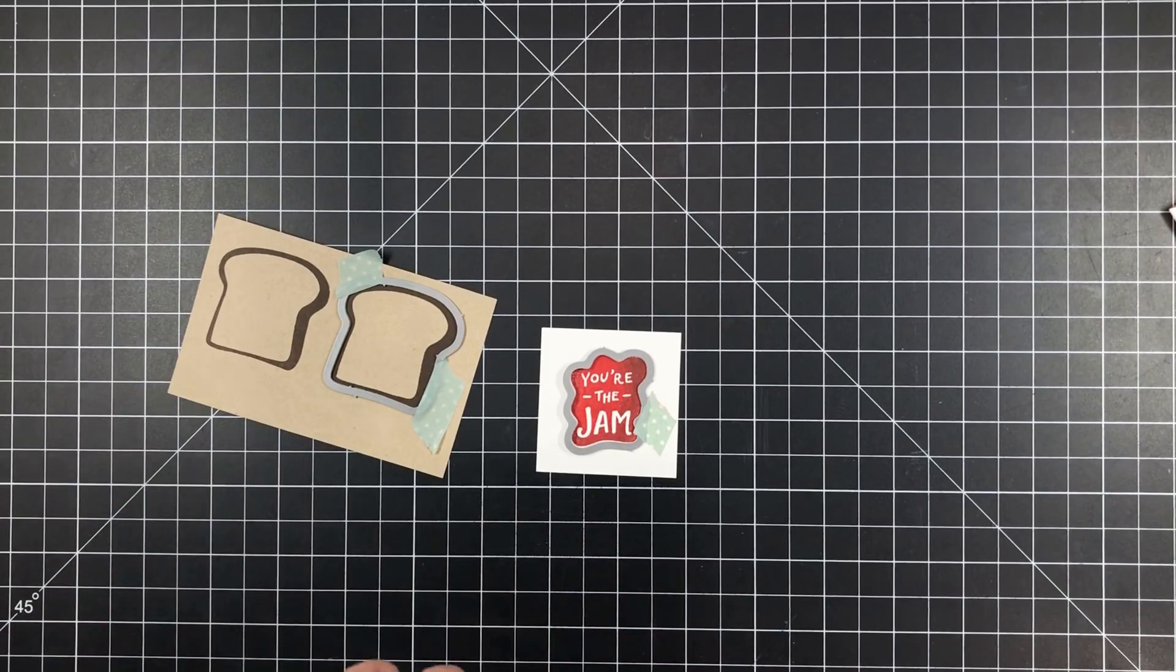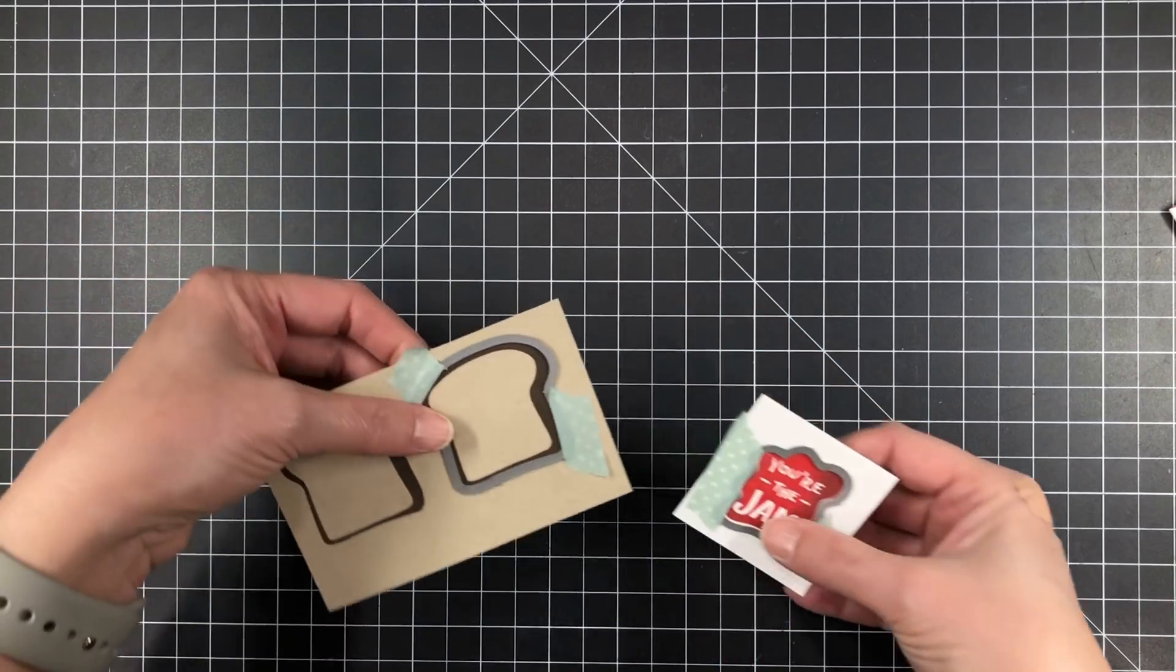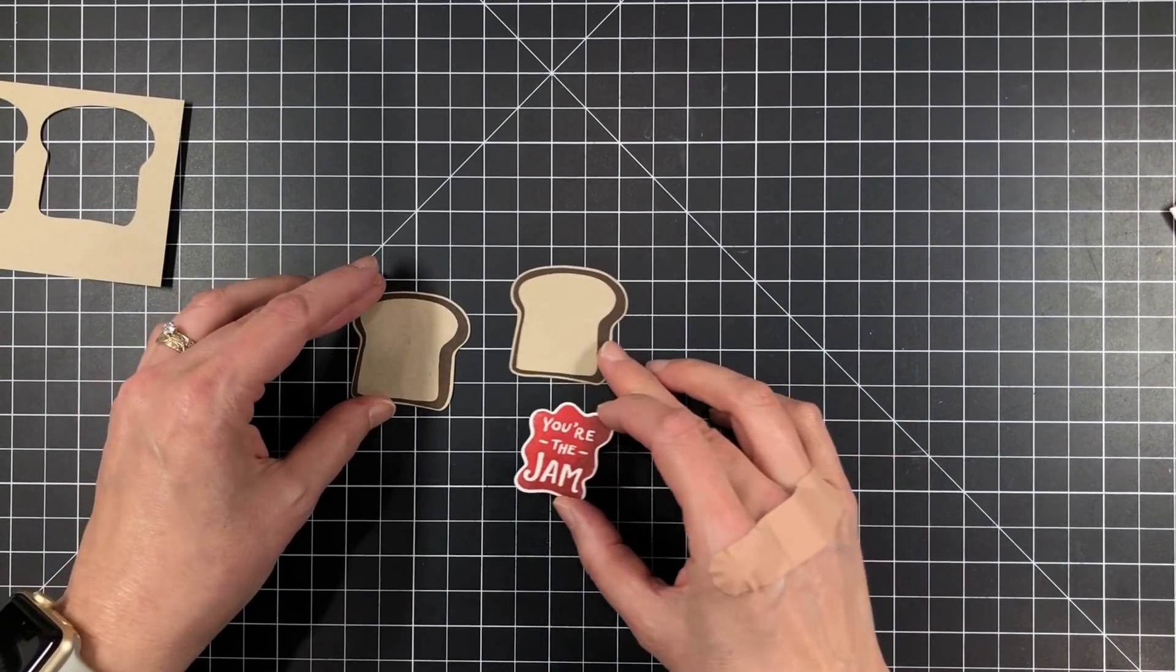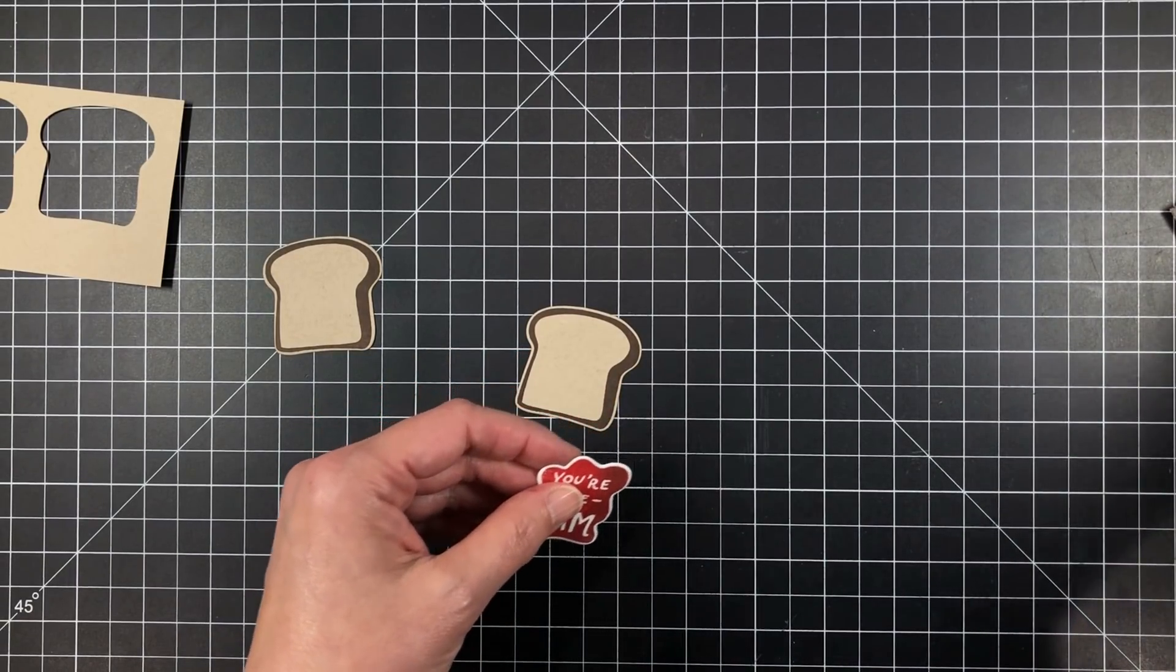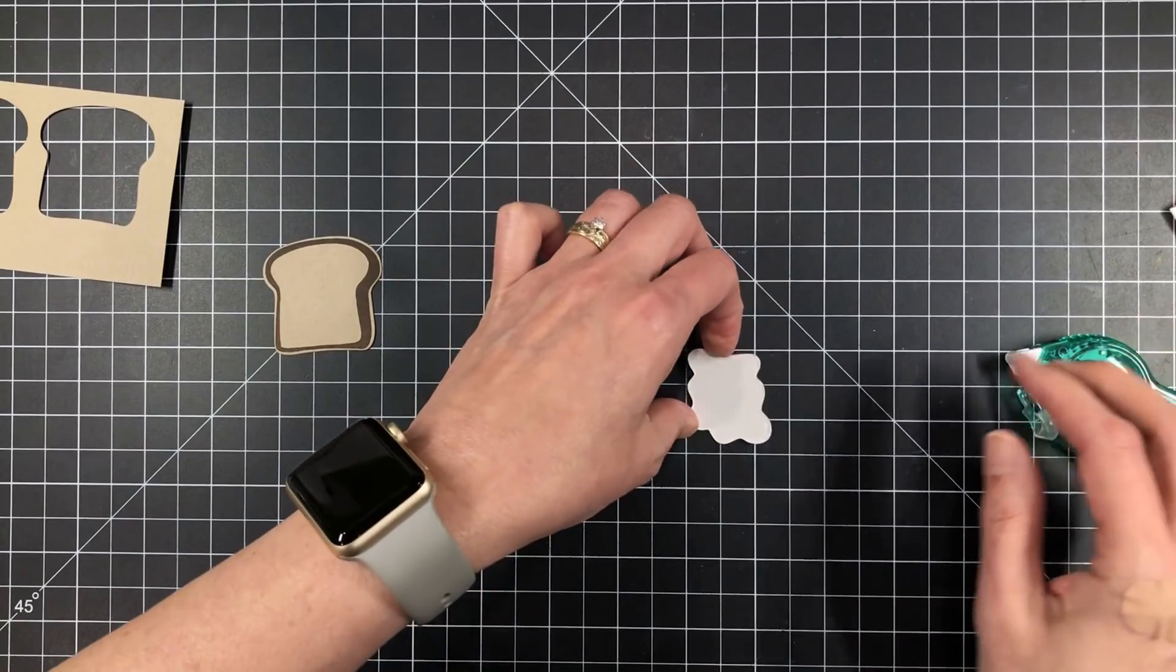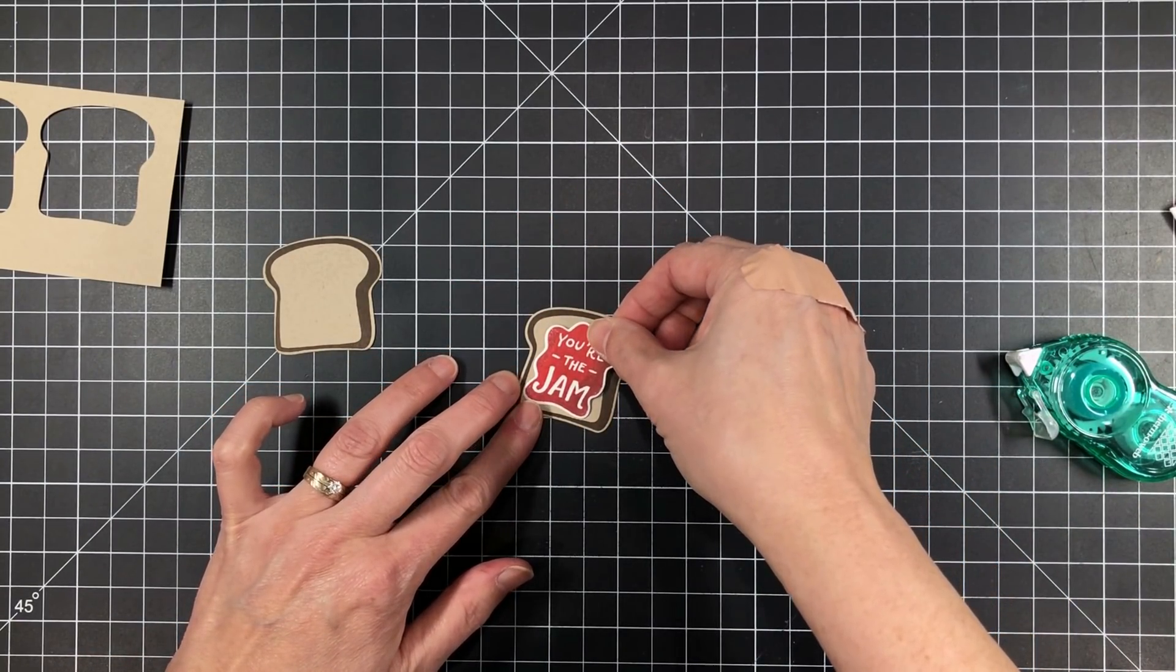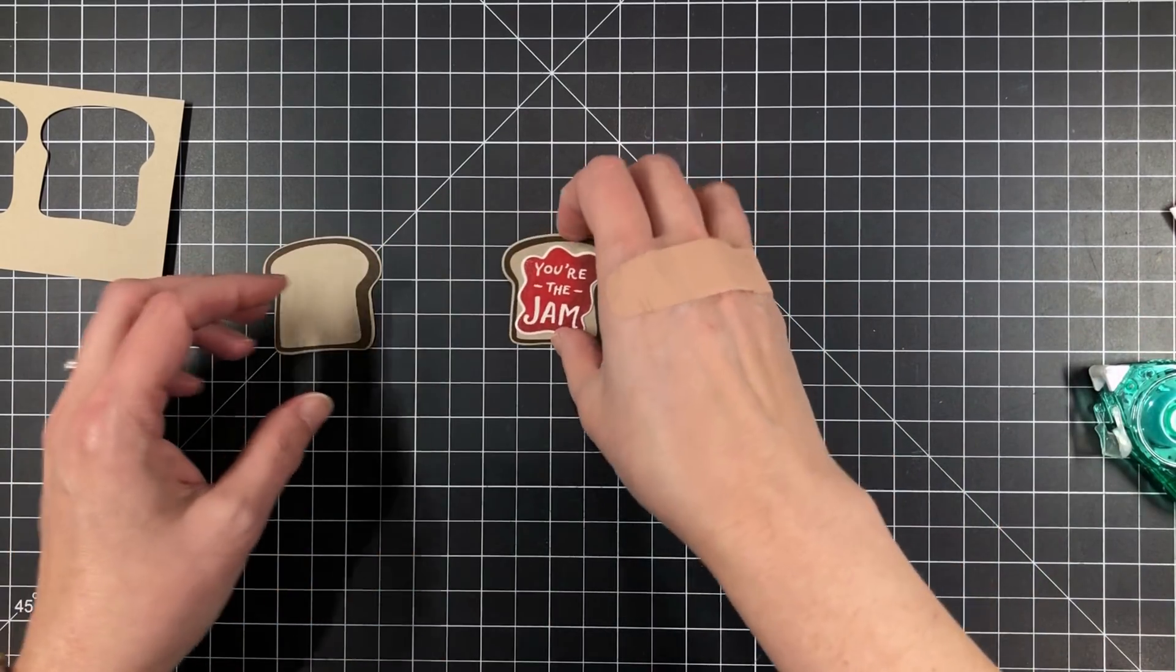So now I'm going to use the coordinating dies here and take this over to my Gemini Junior and get those die cut out and I can start building my sandwich. I'm going to use a tape runner to anchor this onto the top there. And I love this tape runner because it's small and compact, fits nicely in my hand. And it's a dotted adhesive runner. So now you can see how my sandwich is coming together.